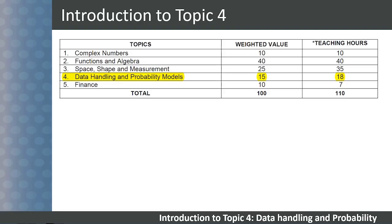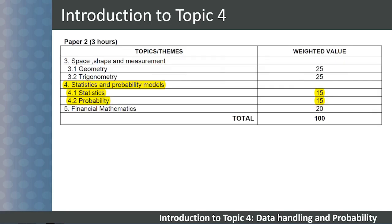Looking at page 5 of our subject guidelines, we can see that Topic 4 makes up 15% of the curriculum and 18 hours of teaching time. This should take roughly 3 and a half weeks. Statistics and probability comprise 30% of the total marks for Paper 2.